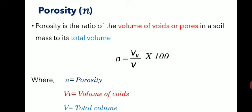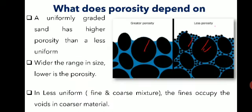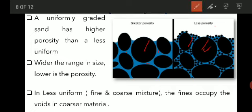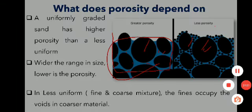To summarize: porosity is the ratio of volume of voids or pores in a soil mass to its total volume. The more voids present, the higher the porosity. It is expressed in percentage. This is the first concept in Module 2 — porosity. I hope you have cleared all your doubts on this topic. Thank you.